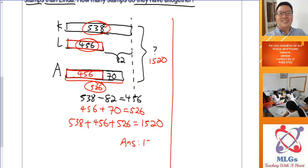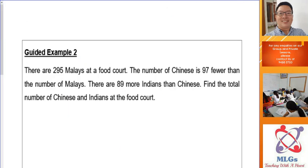In Guided Example 1, we used the comparison model to solve the problem. This time we had three people, so we drew three rectangles. Let's go to Guided Example 2 and reinforce what we have learned.